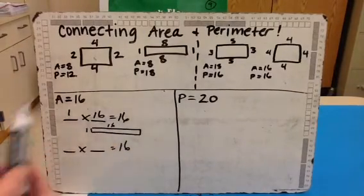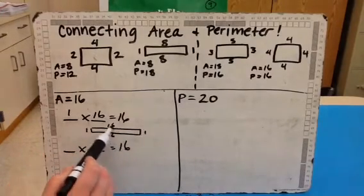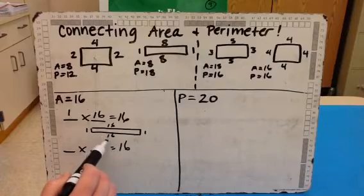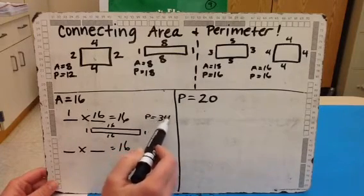And so if I multiply my length times width, 1 times 16 is 16. So that would give me a really long array, a row of 1 and 16 columns. So here if I do a 1 by 16, my area is 16 square units. Now if I look and I think about the perimeter here, so 16 and 16 is 32, and then 2 more, my perimeter is actually 34.